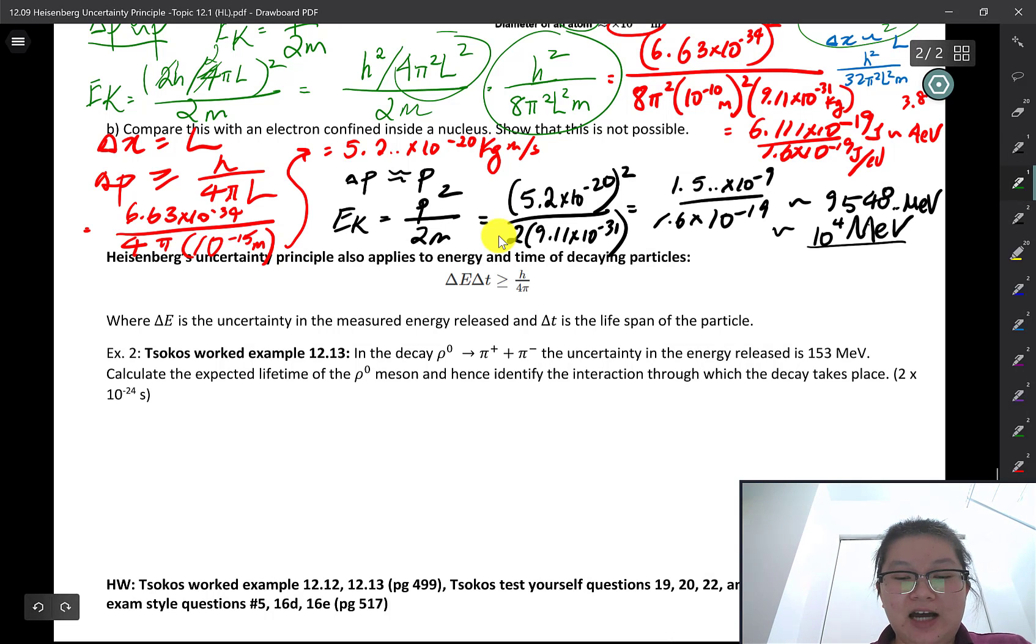So let's get a show on the road. Here we have a decay. The uncertainty in the energy released is this one. And we want to find the expected lifetime of this meson and hence identify the interaction through which the decay takes place.